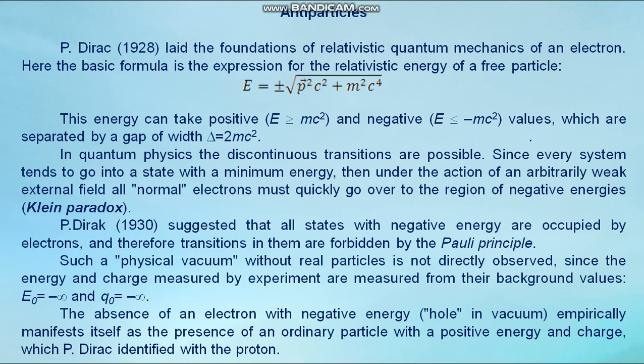Dirac, 1930, suggested that all states with negative energy are occupied by electrons, and therefore transitions in them are forbidden by the Pauli principle. Such a physical vacuum without real particles is not directly observed, since the energy and charge measured by experiment are measured from the background values E₀ equals minus infinity and Q₀ equals minus infinity. The absence of electron with negative energy, hole in vacuum, empirically manifests itself as the presence of an ordinary particle with a positive energy and charge, which Dirac identified with the proton.